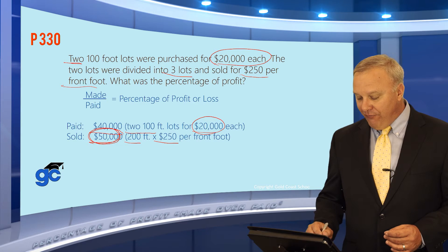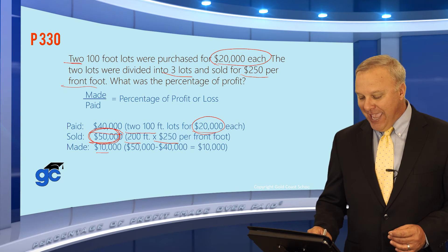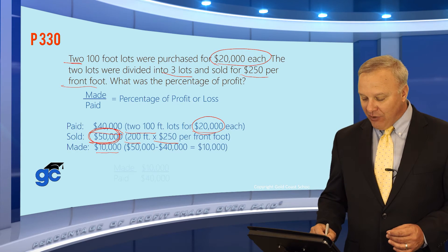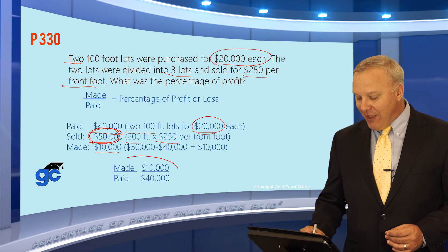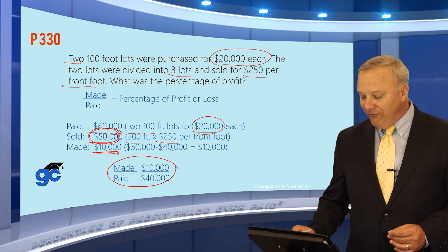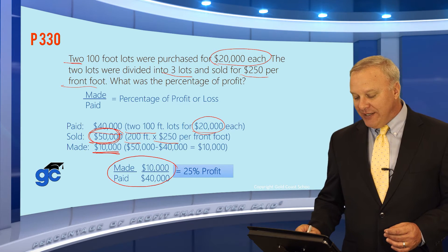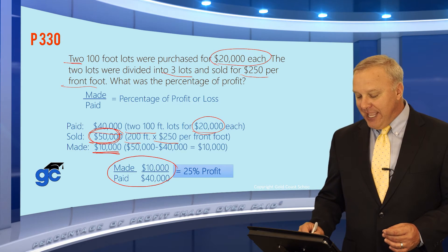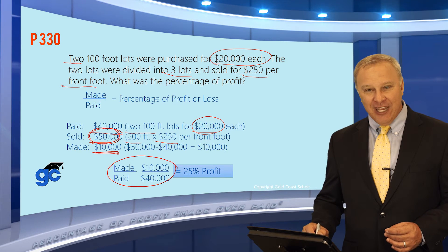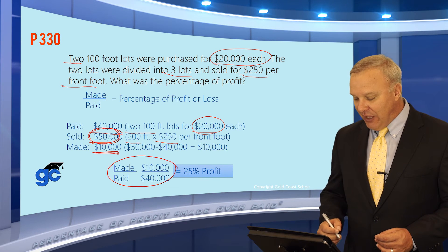So they paid $40,000 and sold it for $50,000, which means they made $10,000. We now put that in the calculator — made over paid: $10,000 divided by $40,000 — and we find that these people incurred a 25% profit. If you work this backwards, 25% of the $40,000 they paid would be their profit, which is $10,000. Just an easy way to check yourself.